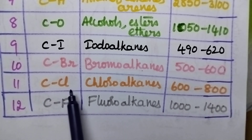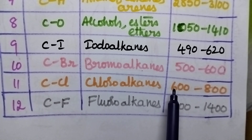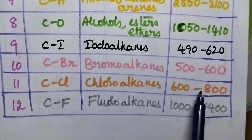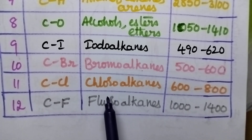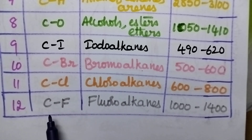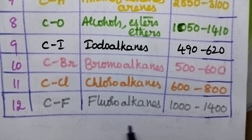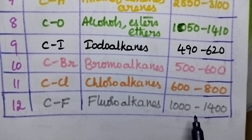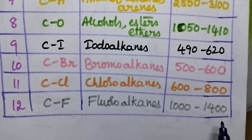C-Cl bond will show a characteristic absorption around 600 to 800 cm inverse in chloroalkanes. C-F bond present in fluoroalkanes will show a characteristic absorption from 1000 to 1400 cm inverse.